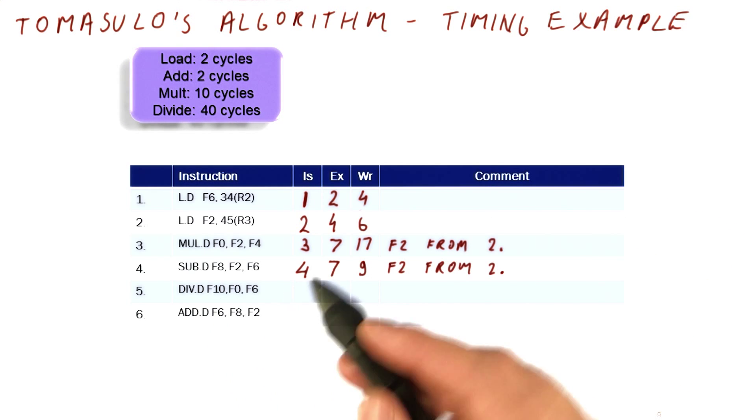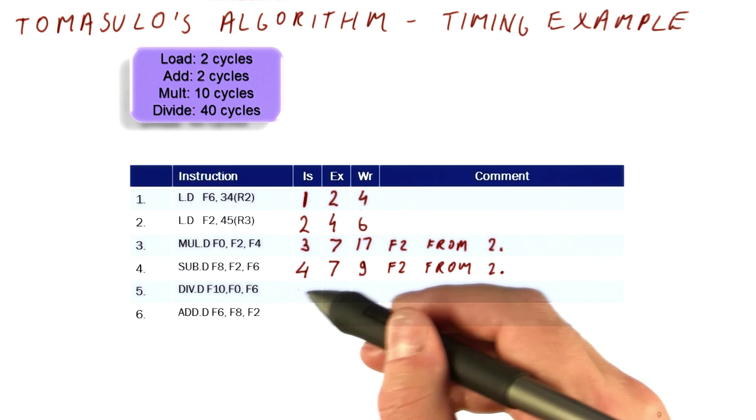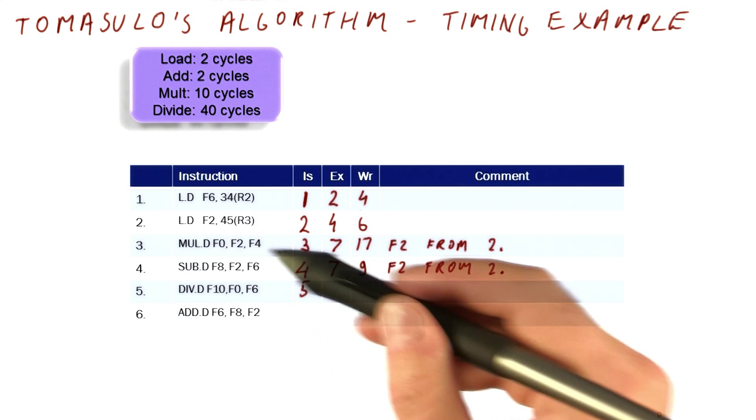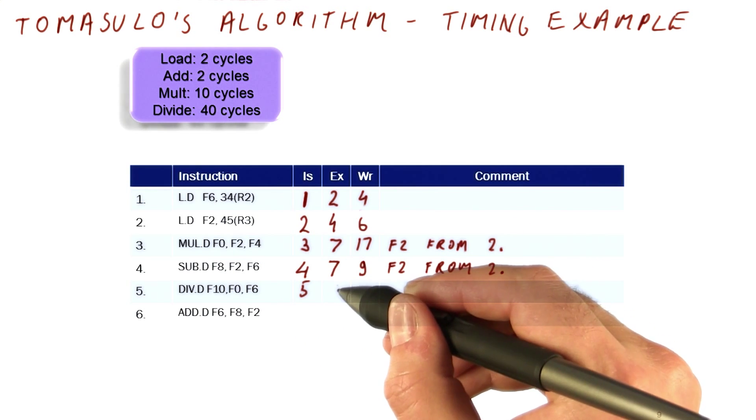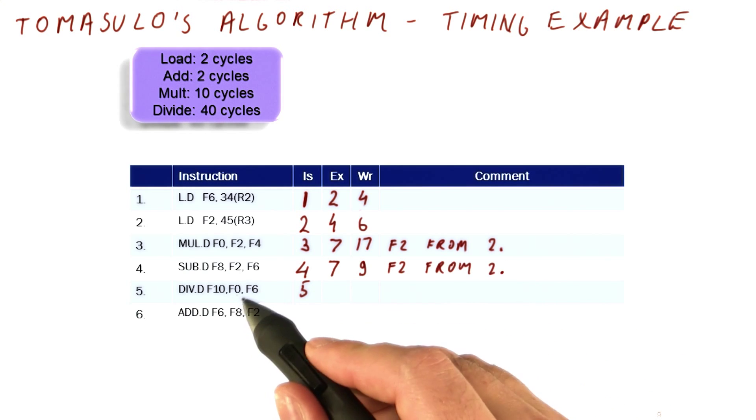Next, we're going to consider this divide. Can it issue in cycle five? Well, yes it can, because so far only one reservation station is used and we have two of them. So the question is, when can it execute?